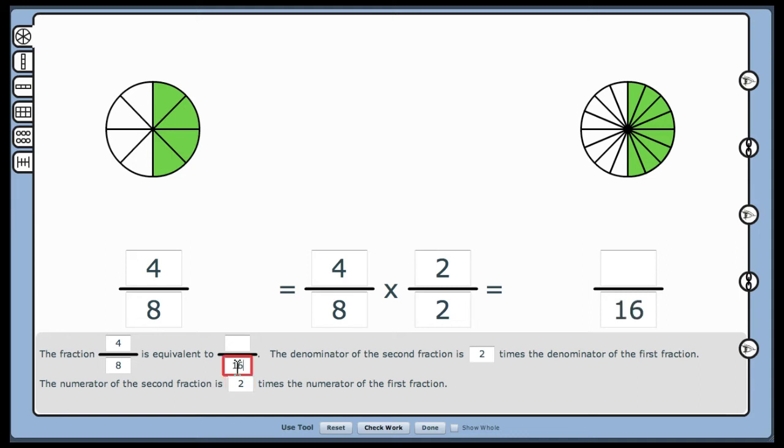So the numerator is 2 times. That way I have a representation or a multiple of 1, 2 halves, which equals 8 sixteenths.